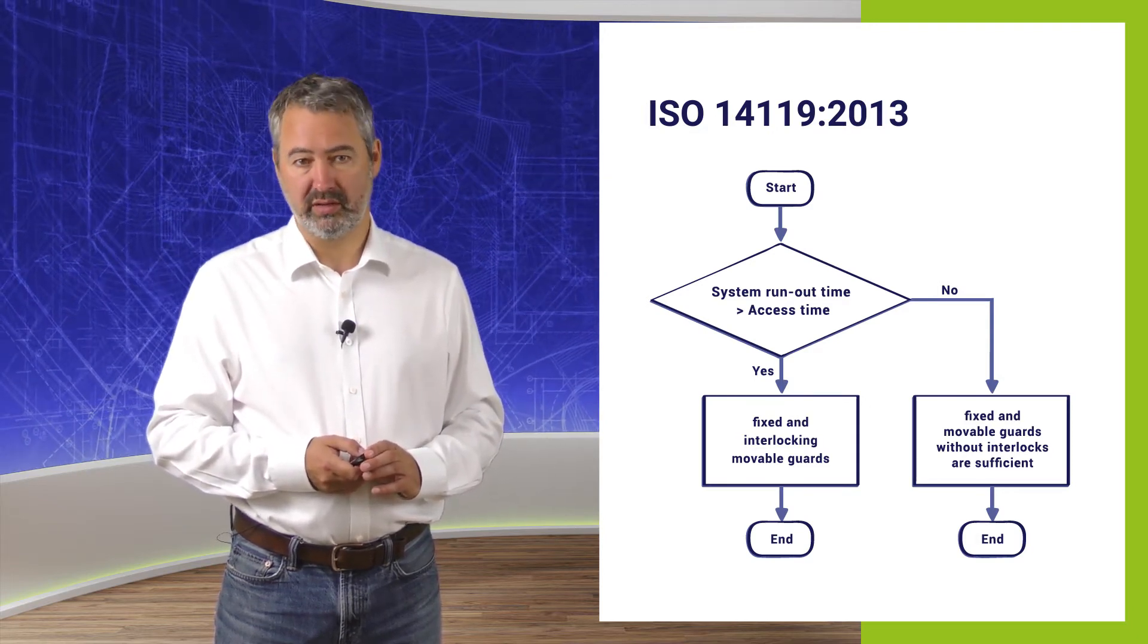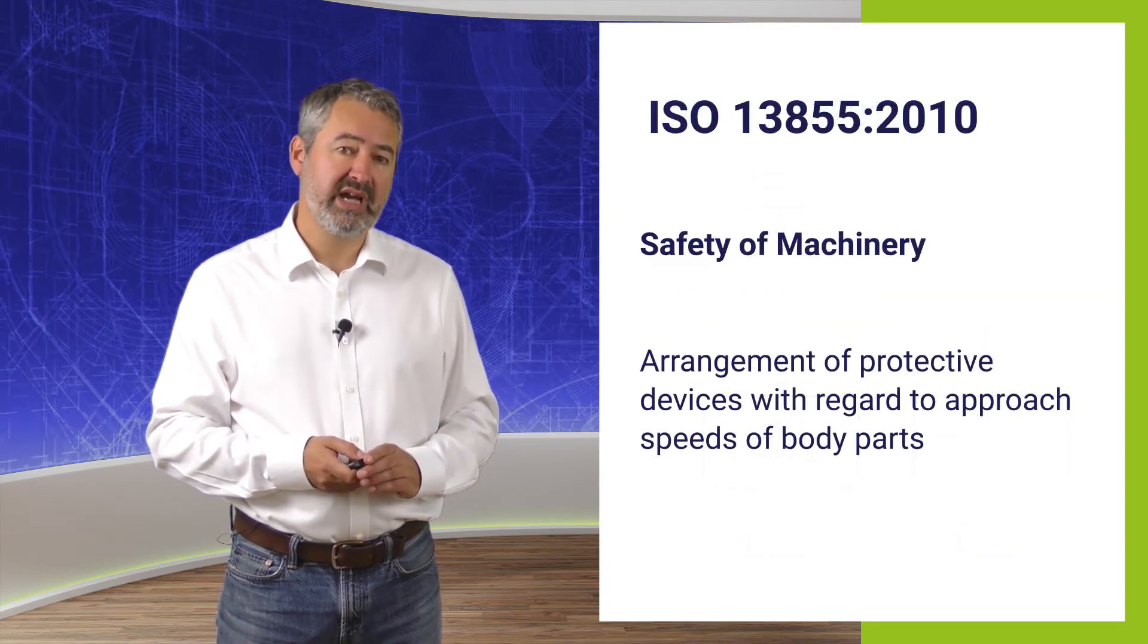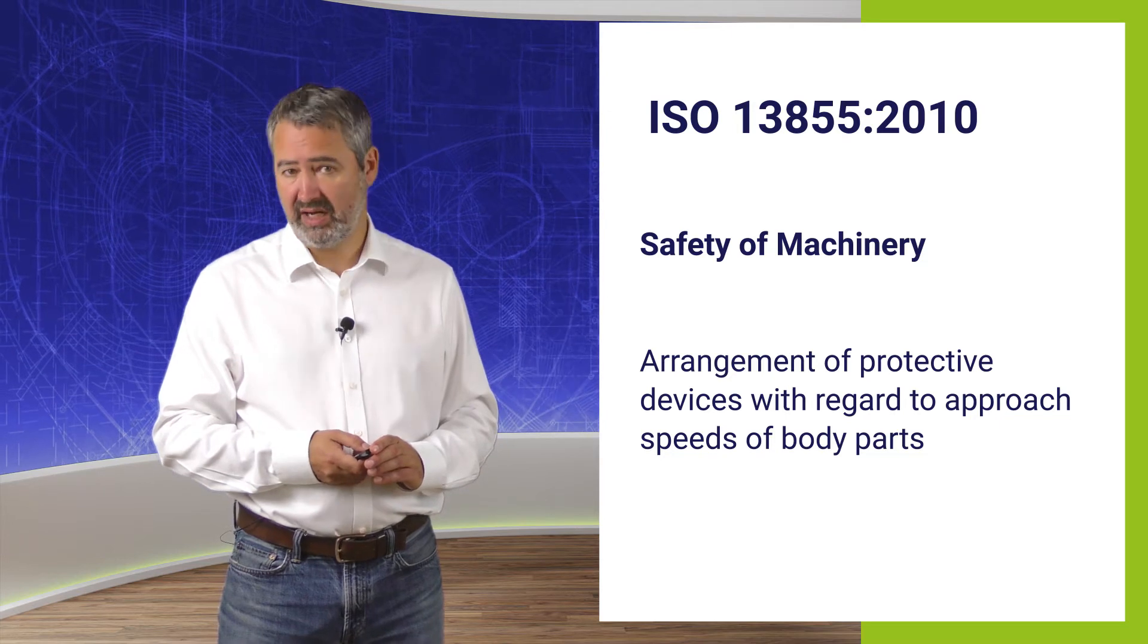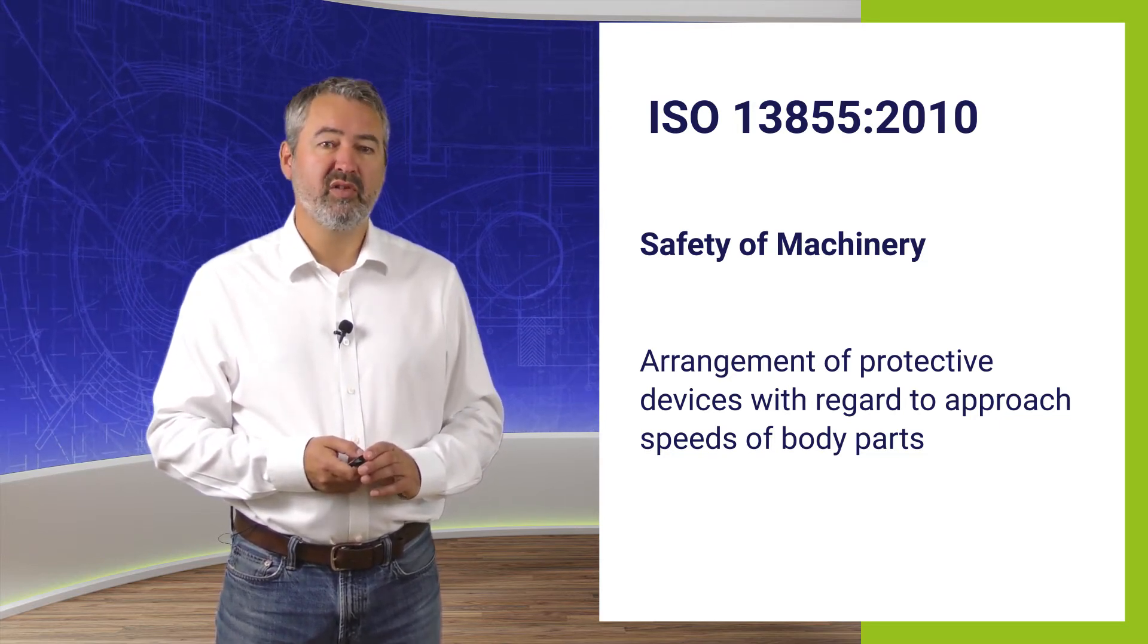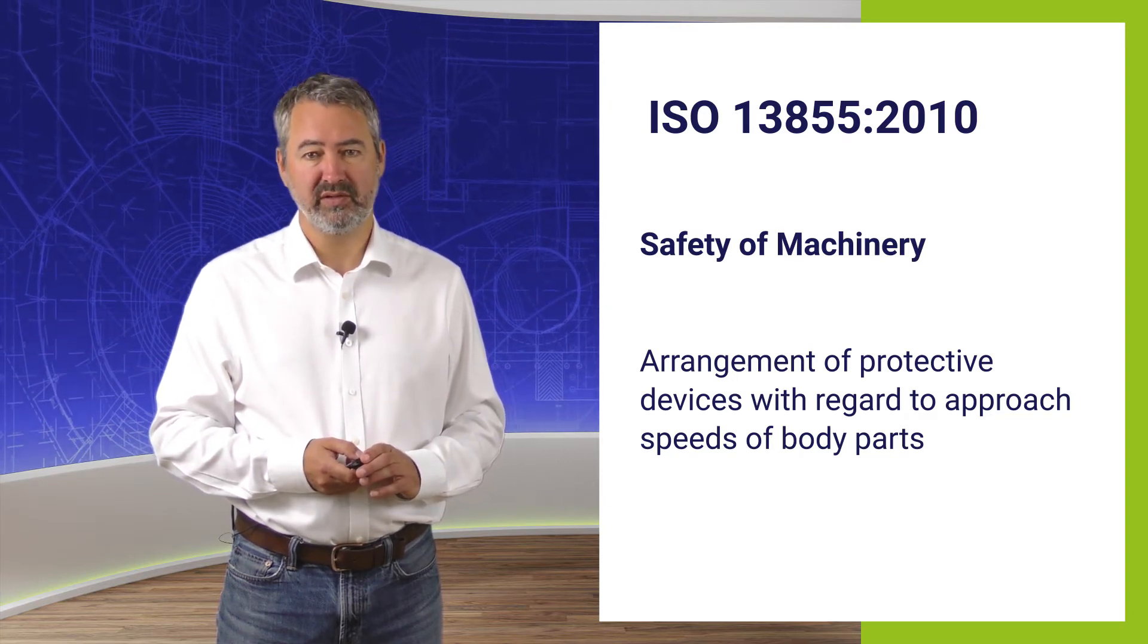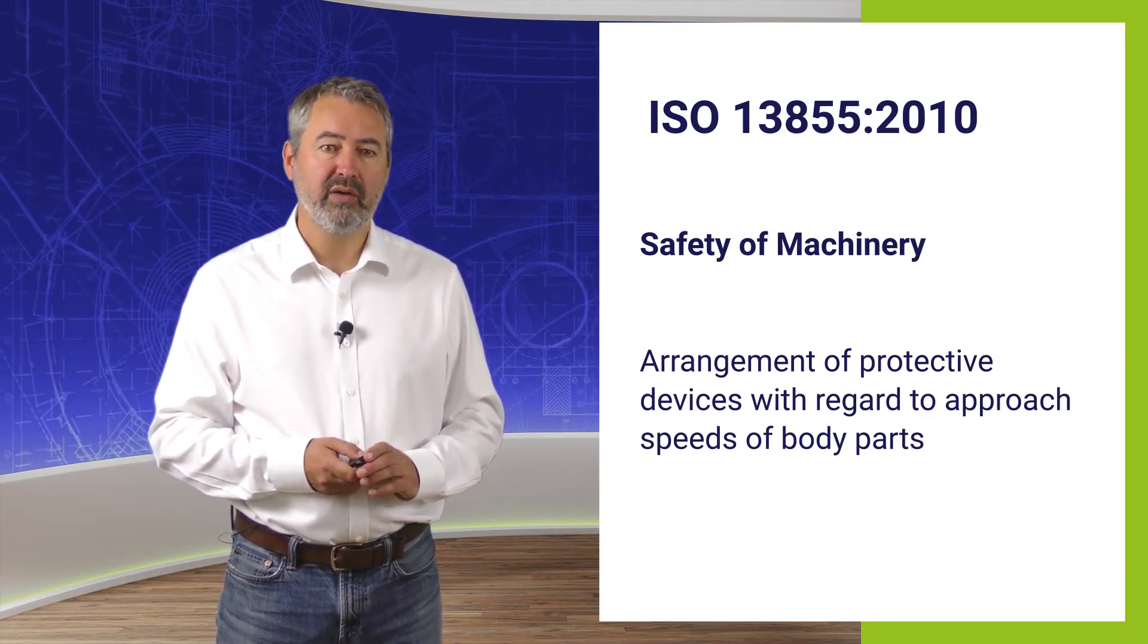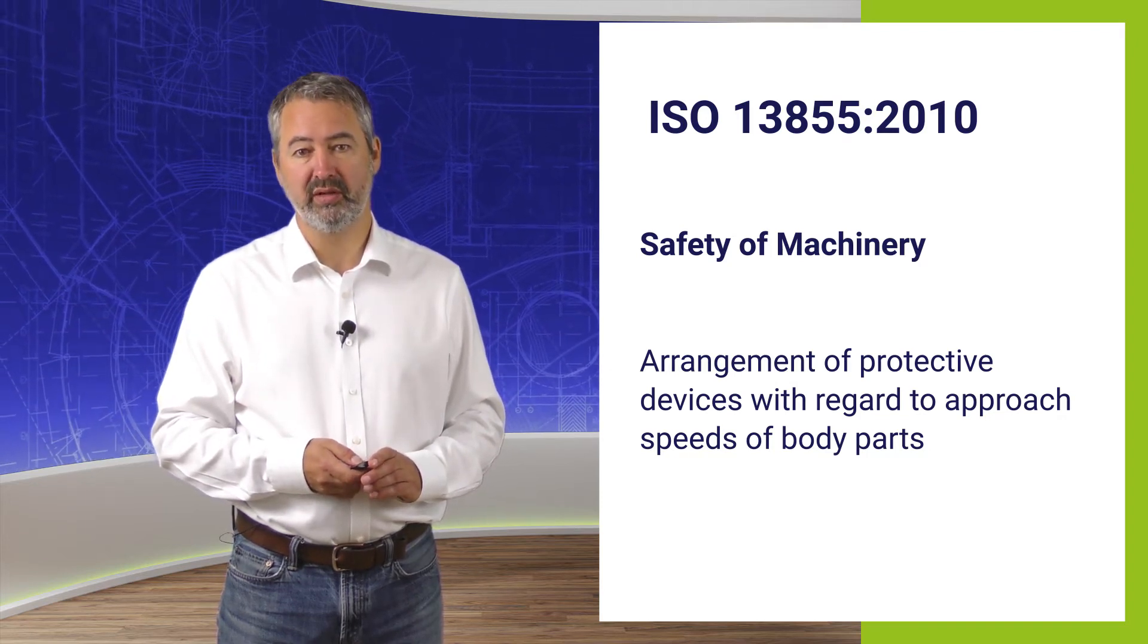The ISO 13855 from 2010, entitled Safety of Machinery, Arrangement of Protective Devices with regard to Approach Speed of Body Parts, describes how to determine the overrun time of dangerous movement in machines.